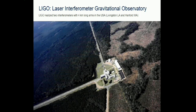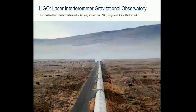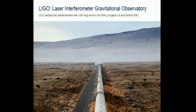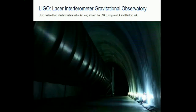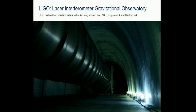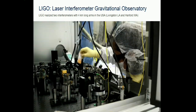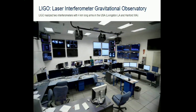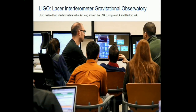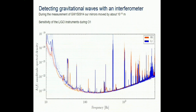LIGO is the device that made the first detection. There are two interferometers: one in Hanford, Washington, and one in Louisiana, about 3,000 kilometers apart - light takes 10 milliseconds to travel between them. Here you see the control room of one of the detectors. With these detectors we achieved remarkable sensitivity.